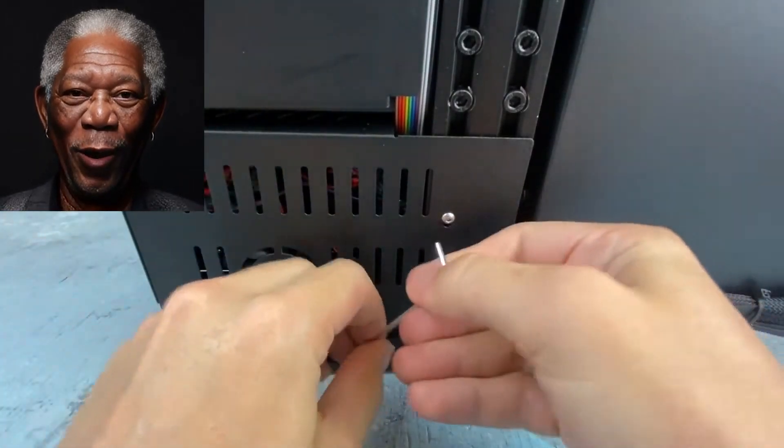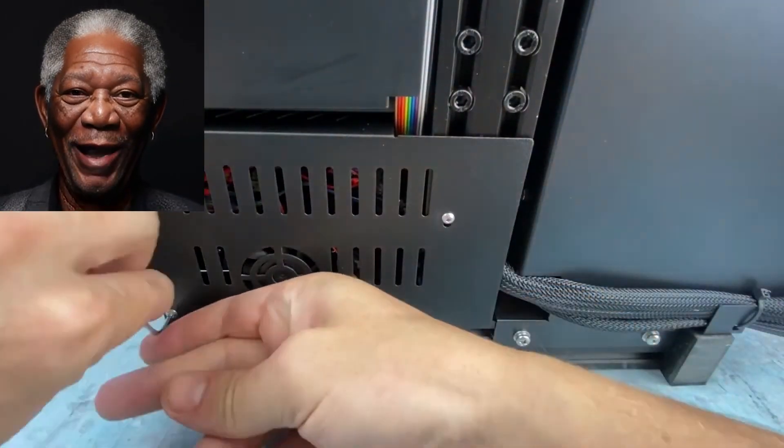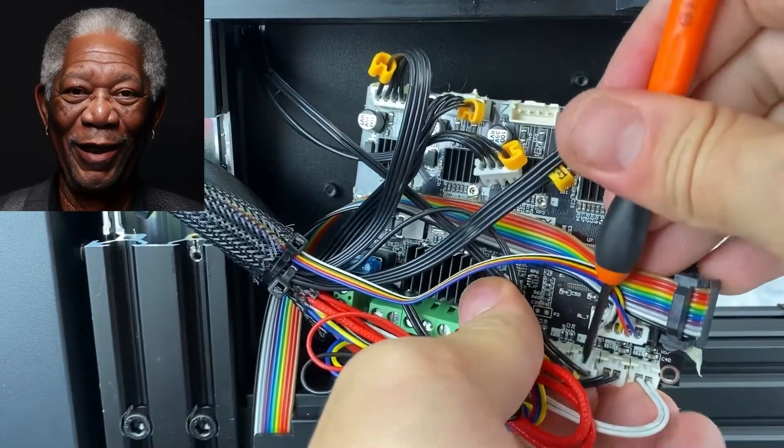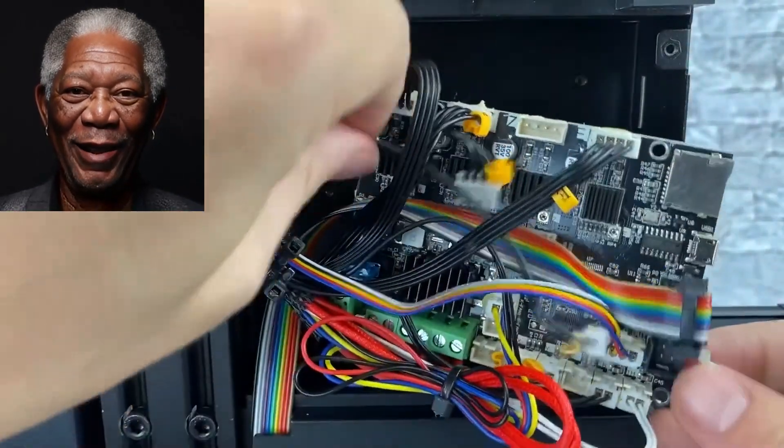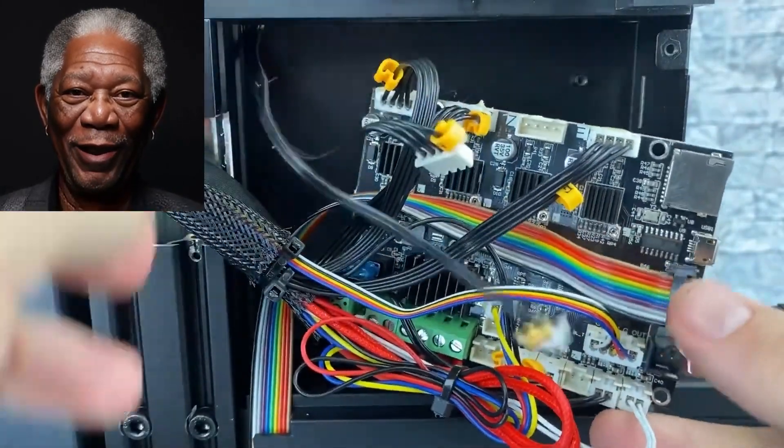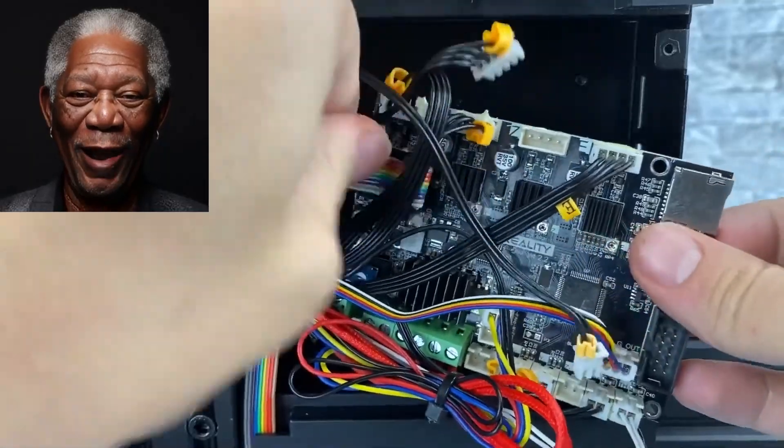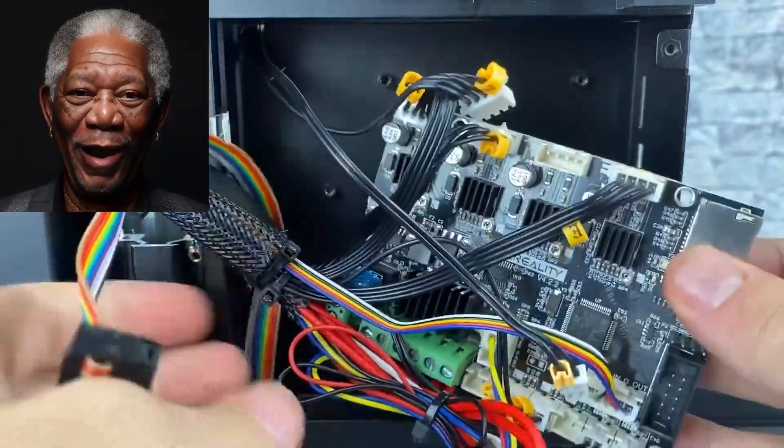The upgraded 4.2.7 main board offers notable advantages. This essential upgrade will give your Ender 3v2 a significant performance boost, enabling smoother movements, quieter operation, and overall better stability.